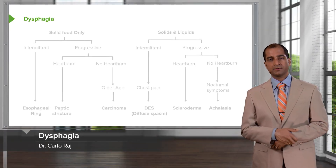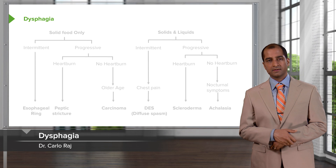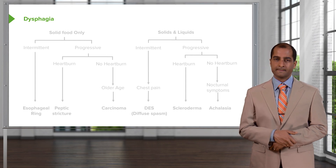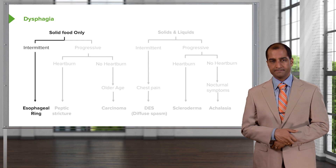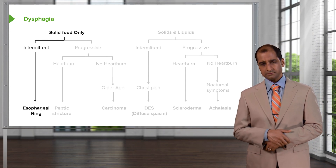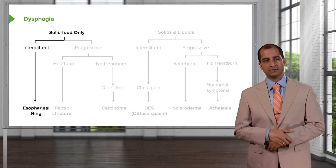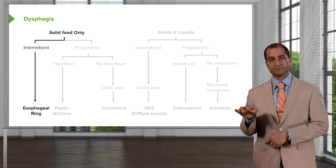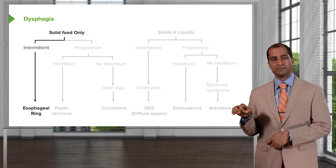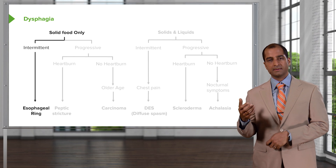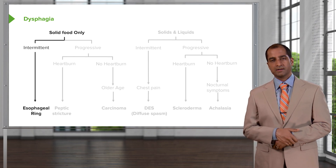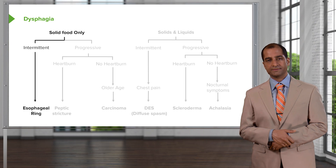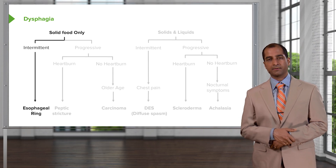With dysphagia, we'll be looking at an algorithm. The objective of this slide is to show you the behavior of dysphagia. If it involves solid foods only that the patient is experiencing dysphagia to, what kind of differential would you describe? If it's intermittent, that would mean there is a fixed obstruction in which the caliber of the esophagus is becoming narrowed, making it difficult for solid foods to transit through. We'll describe esophageal rings in great detail and show images with upper endoscopy.